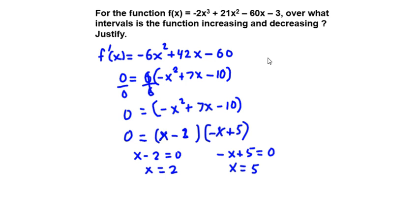So these will be our critical numbers. Let's work on a number line. On a number line, we place our critical numbers, which are 2 and 5. Again, these critical numbers are where the value of this first derivative function is 0. We're going to put f prime on top and f on the bottom.